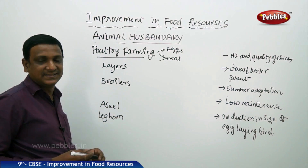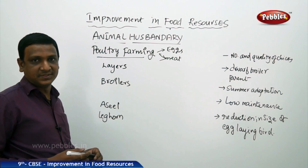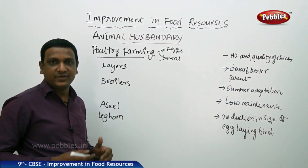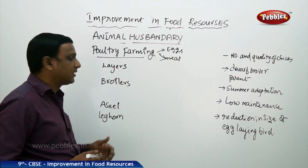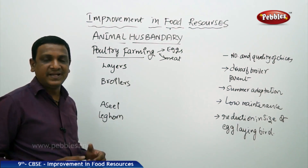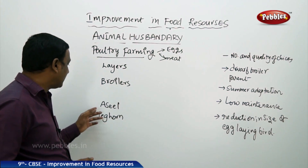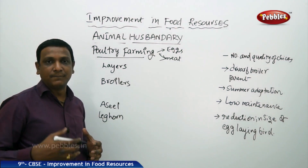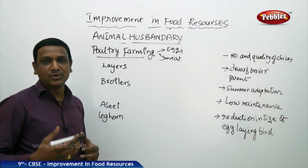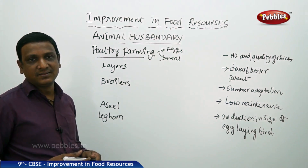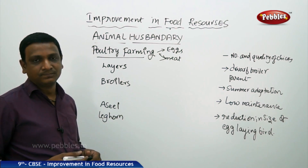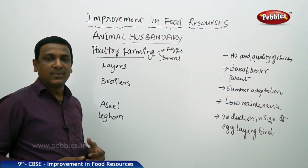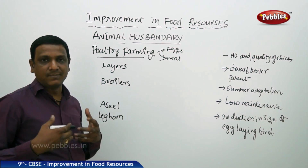Layers are meant for laying eggs; broilers are meant for meat purpose. These are the different breeds — foreign varieties and local varieties. Local varieties like Asil, seen in villages, are of different colors and different body structure, looking different from the chickens you see in a poultry farm or a chicken center. These local varieties take a very long time to grow up — they grow naturally but take very long to be completely ready.